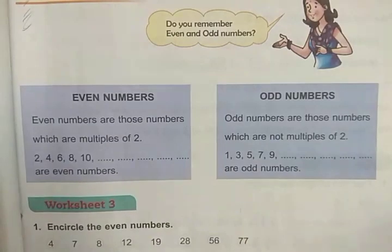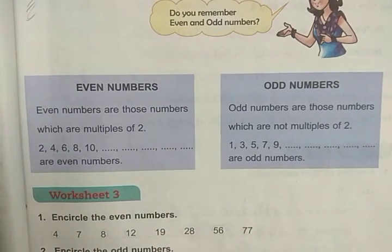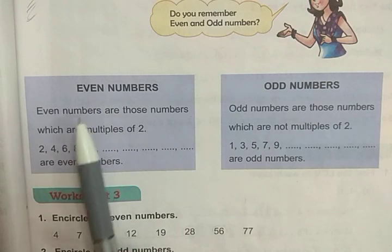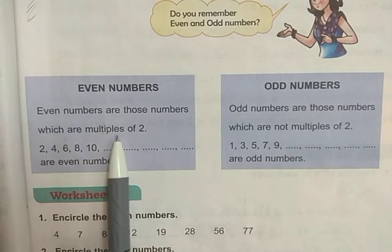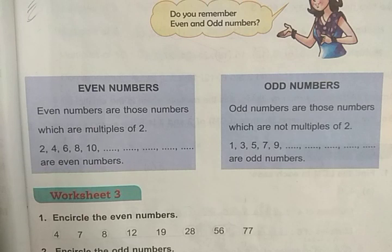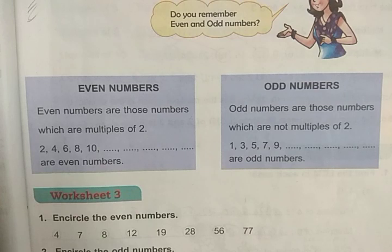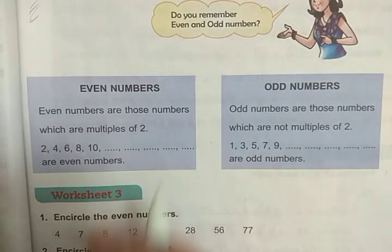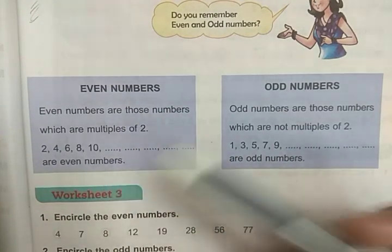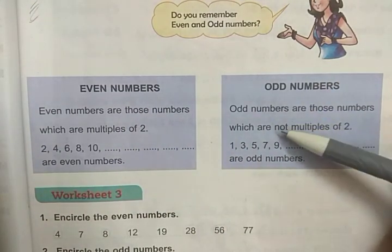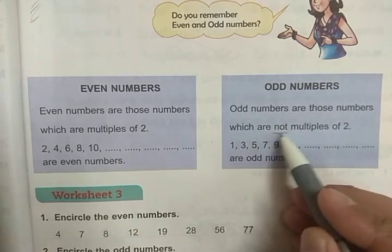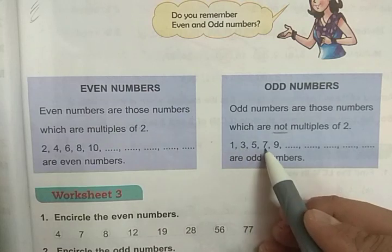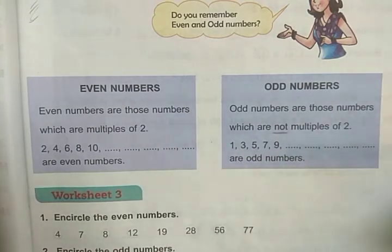Now, do you remember even and odd numbers? Even numbers are those numbers which are multiples of 2 — that means they come in the multiplication table of 2: 2, 4, 6, 8, 10, and so on. Odd numbers are those numbers which are not multiples of 2: 1, 3, 5, 7, 9, and so on.